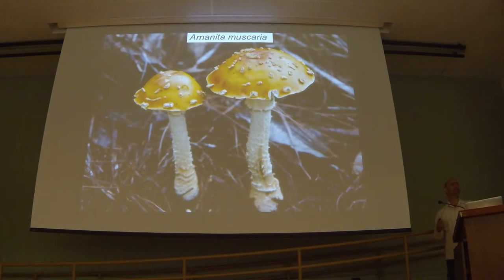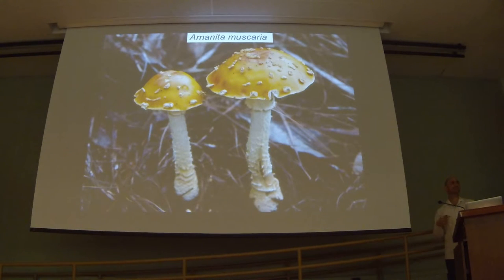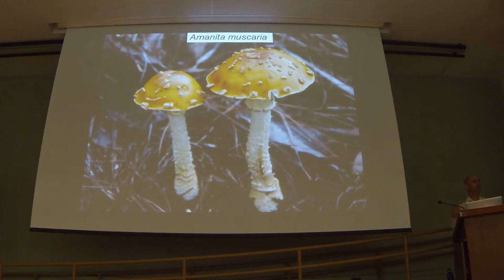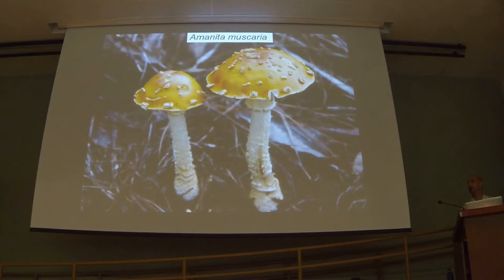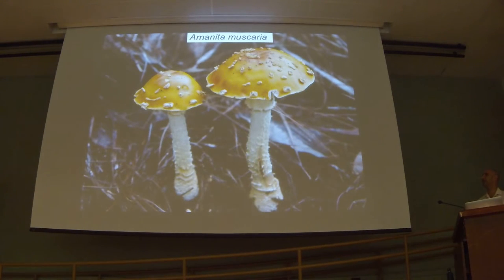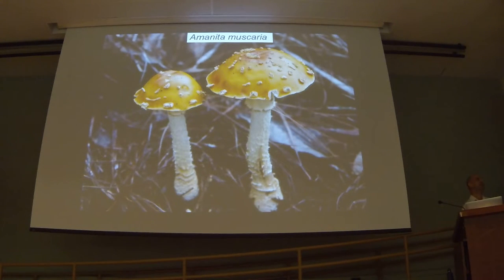Amanita muscaria is another one — you'd recognize it from the Smurfs, our very iconic mushroom, sometimes with a bright red cap and white spots. It grows in Hawaii up in pine plantations on Maui and Big Island. In some parts of the world like Siberia and northern Russia, cultures with shamanic traditions would eat this mushroom as part of healing rituals to go into trances. I have no moral objection to hallucinogenic mushrooms, but don't do it with this one. As you go farther south in latitude, it contains less of the hallucinogenic compound and more of the toxic compound. It probably won't kill you, but it will make you very, very sick.